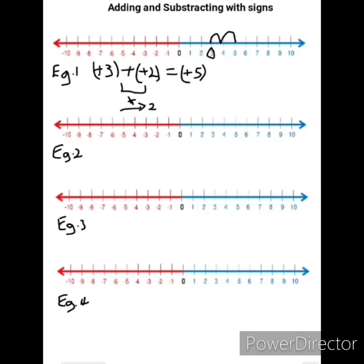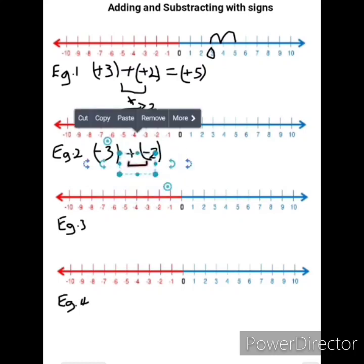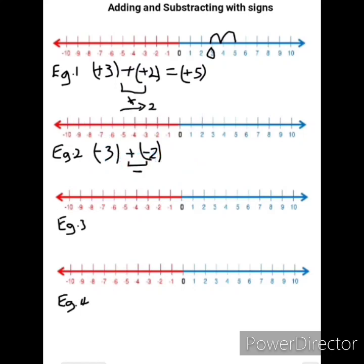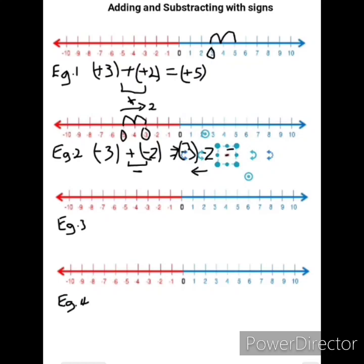Example 2: we have negative 3 plus negative 2. We now have a positive and a negative together, so we multiply — a positive multiplied by a negative gives us a negative. If we rewrite this, we now have negative 3 minus 2. Our negative 3 tells us where we are on the number line, the negative indicates we go to the left, and the 2 means we go two places to the left, giving our answer as negative 5.